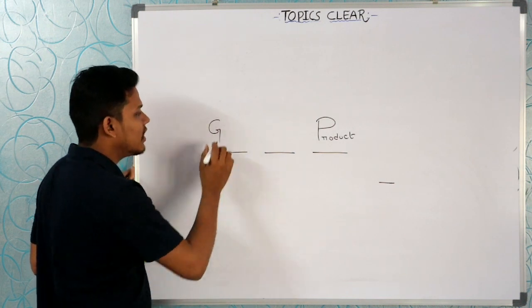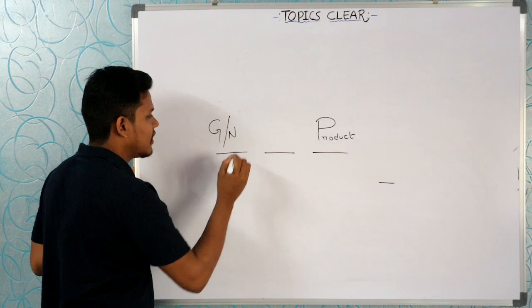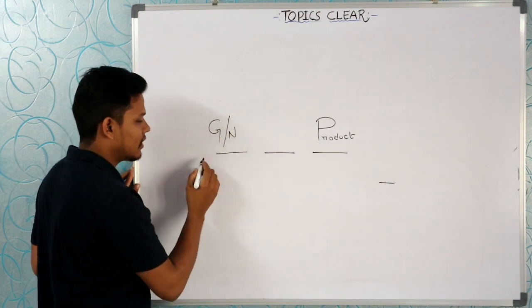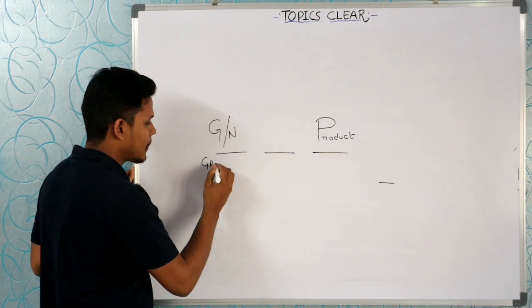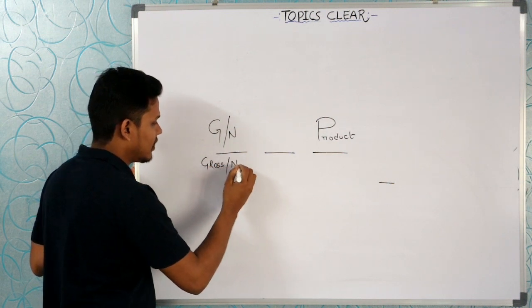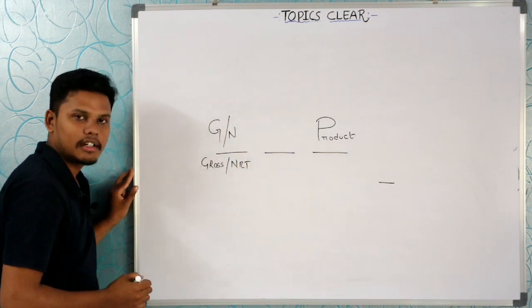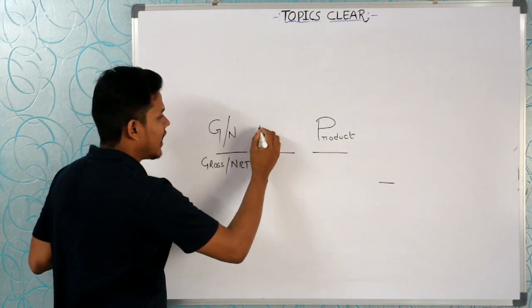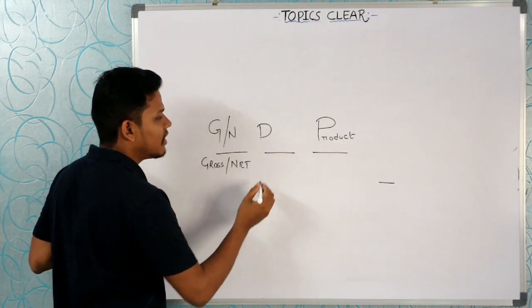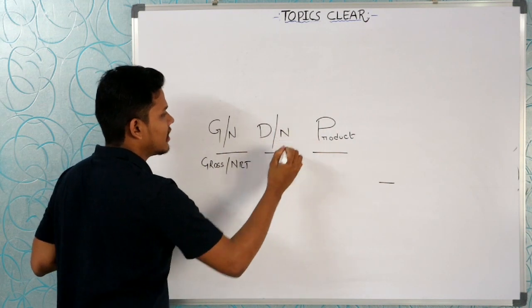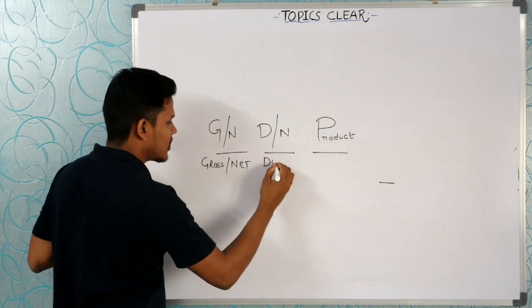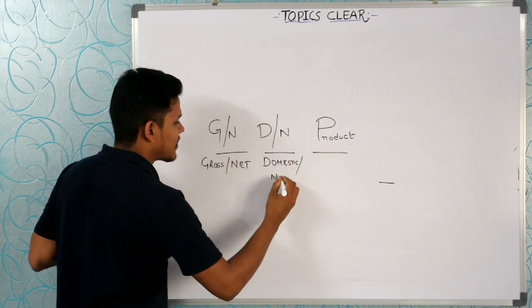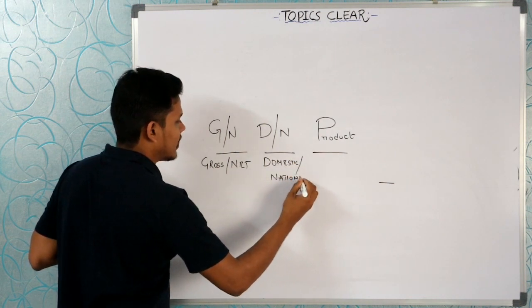The first letter is either G or N — meaning gross value or net value. The second letter is either D or N — meaning domestic or national.